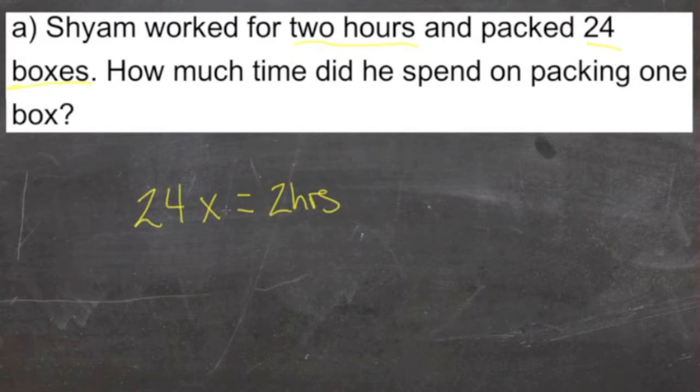Since we're going to have a pretty small amount of time per box, we should probably convert our hours into minutes, otherwise we're going to get a weird fraction. Two hours is 120 minutes. That means we have 24 times some amount of minutes equal to 120 minutes.